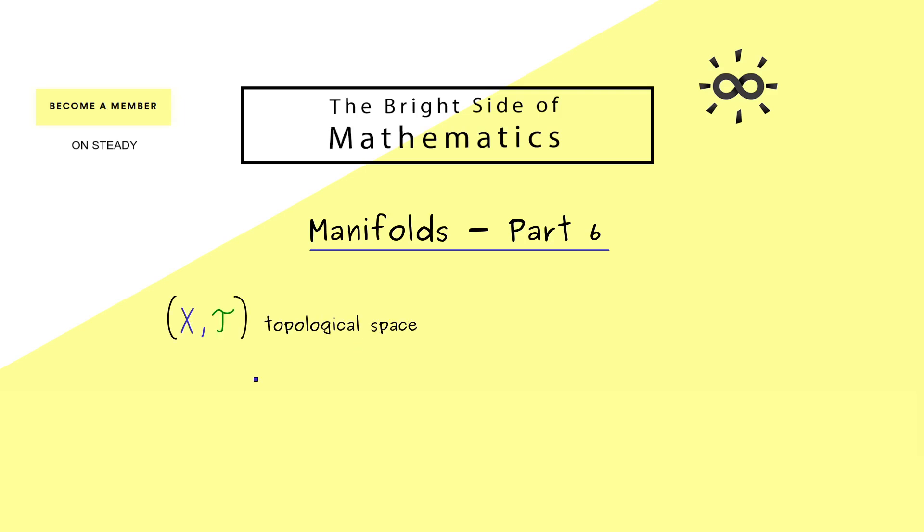For this, the overall idea is that we just need some subsets to generate the whole topology of our topological space. So we want an efficient way to describe our topology T. This means when we know the basis, we also know the whole topology.